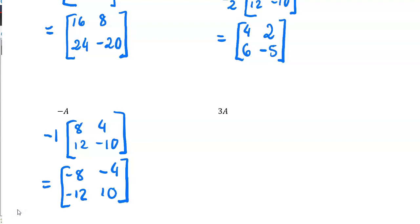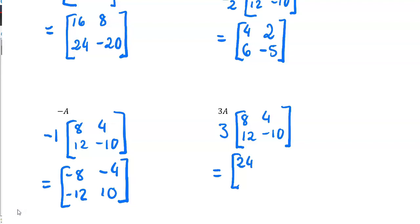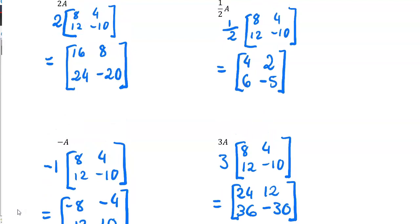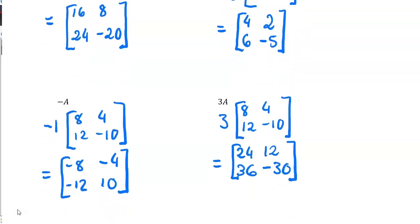You can always use your calculator to help out with these calculations. So now we've got three times A — three times the matrix A. Three times eight is twenty-four, three times four is twelve, three times twelve is thirty-six, and three times negative ten is negative thirty. Don't forget to always have our matrices in square brackets — must be square brackets — making it clear what column and row the elements are in.